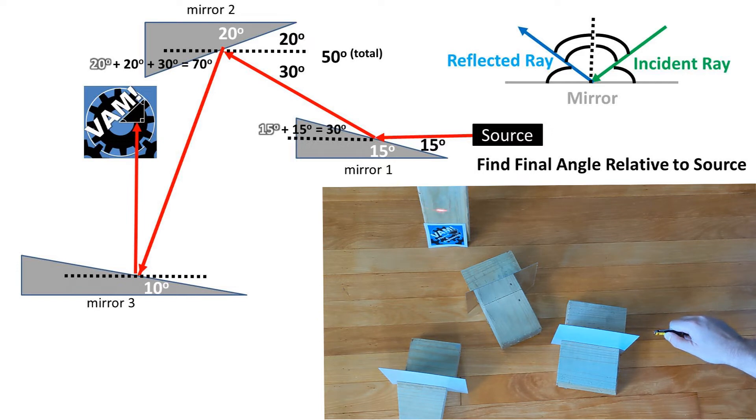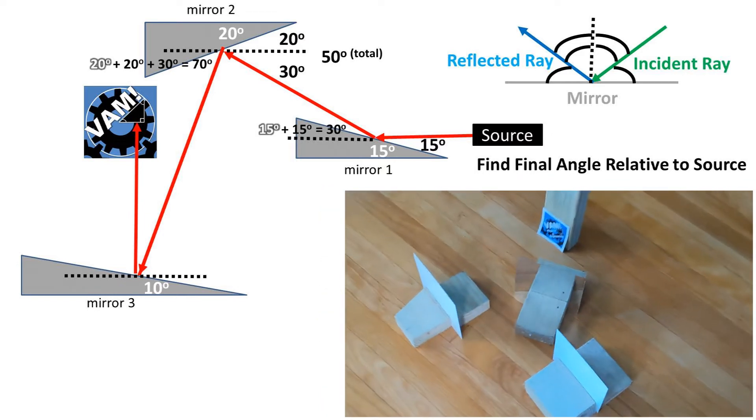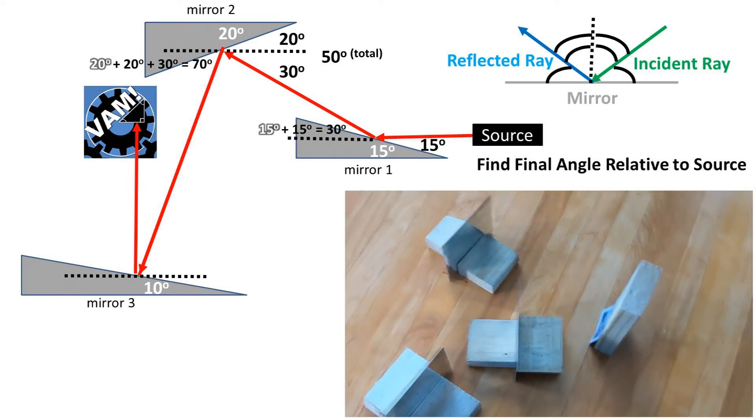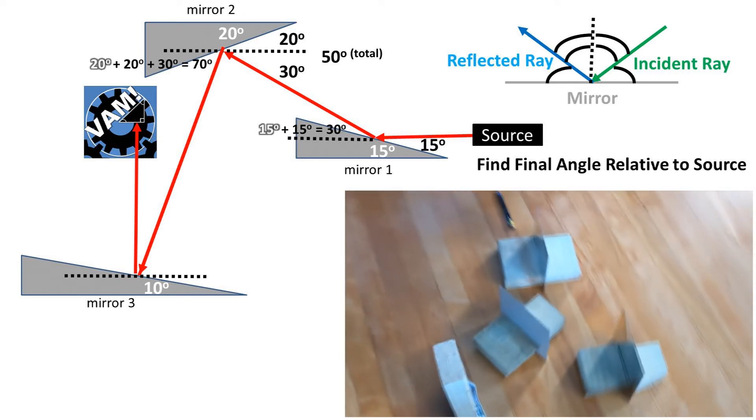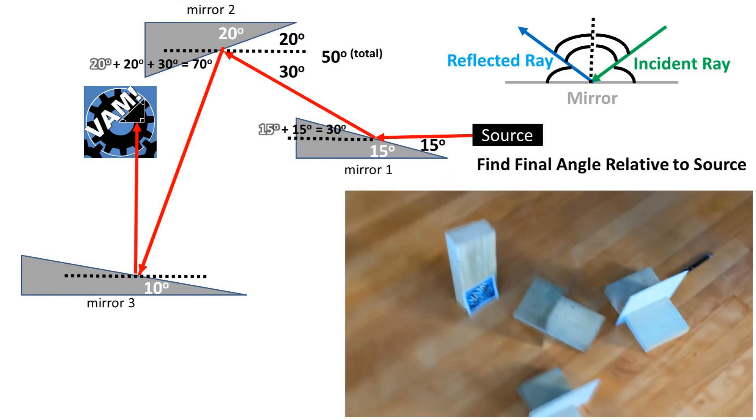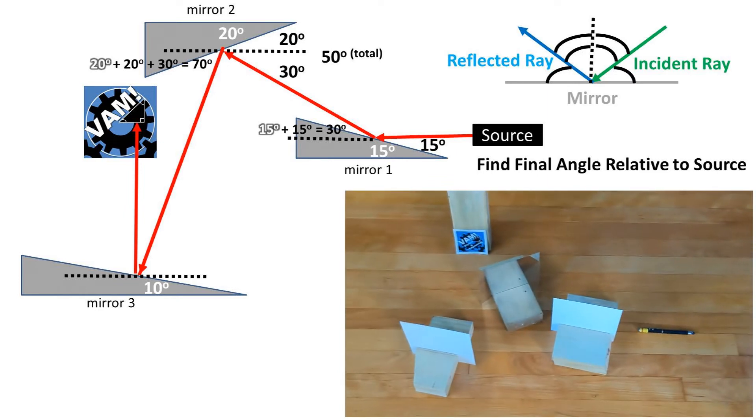This ray bounces off the mirror at a 50 degree angle relative to the surface, but we must also take into account the slant of the mirror of 20 degrees. So it bounces off the mirror at an angle of 70 degrees relative to the source. 20 plus 20 plus 30 degrees.